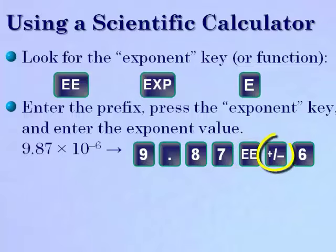In our case, we'd have to press the plus or minus key to get that negative in there, and then press the 6 key. That would enter the value 9.87 times 10 to the minus 6 into your calculator to be used in an operation.